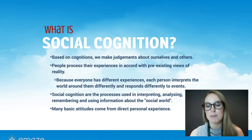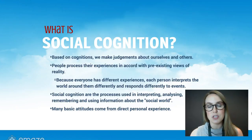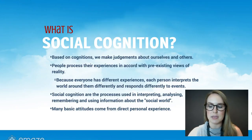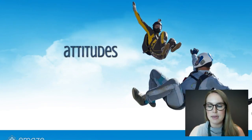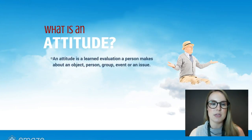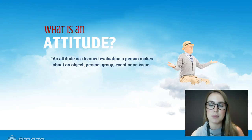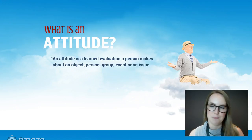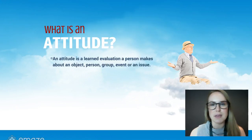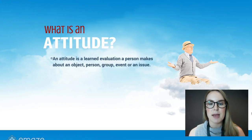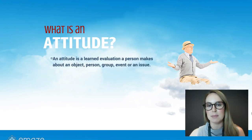Many basic attitudes come from direct personal experiences. In terms of social cognition, we're really going to be focusing on attitudes more specifically. An attitude is a learned evaluation a person makes about an object, person, group, event, or an issue. Try to think of it less like when your parents tell you that you're giving them attitude, and more as a belief or a learned evaluation that you have about something in particular.